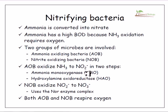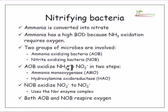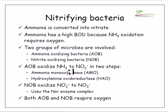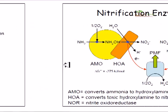The conversion of ammonia into nitrite involves two enzymatic steps: the ammonia monooxygenase (AMO) step and the hydroxylamine oxidoreductase (HAO) step. These two enzymes are required to convert ammonia into nitrite. The subsequent conversion of nitrite into nitrate involves one step via the nitrite oxidoreductase (NOR) system.